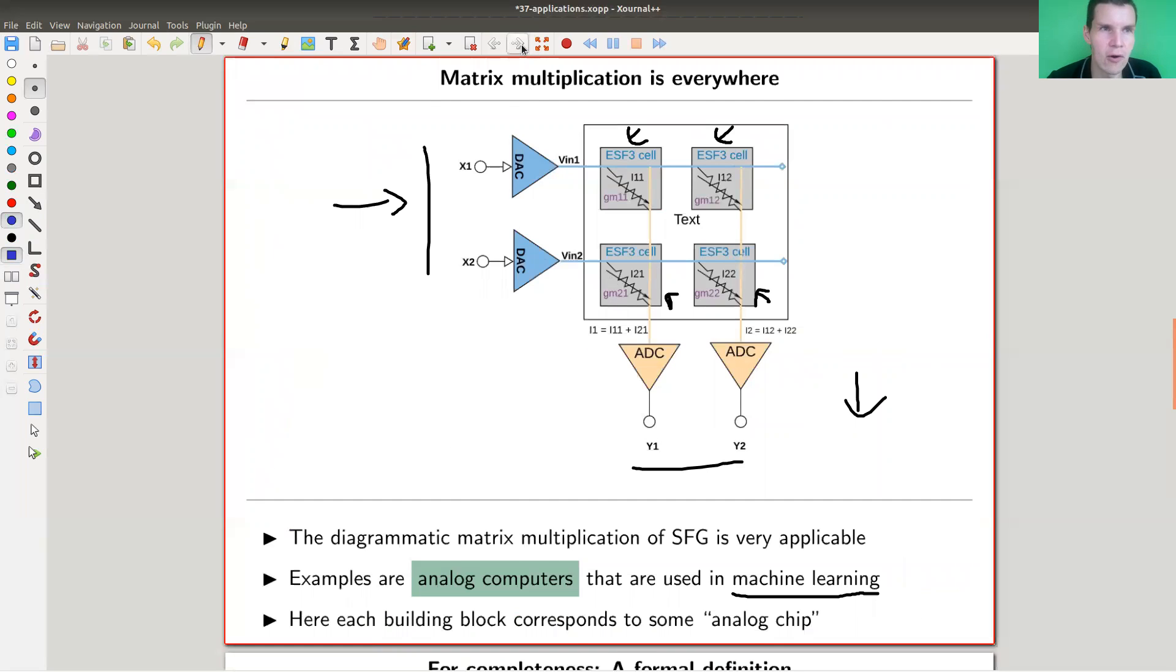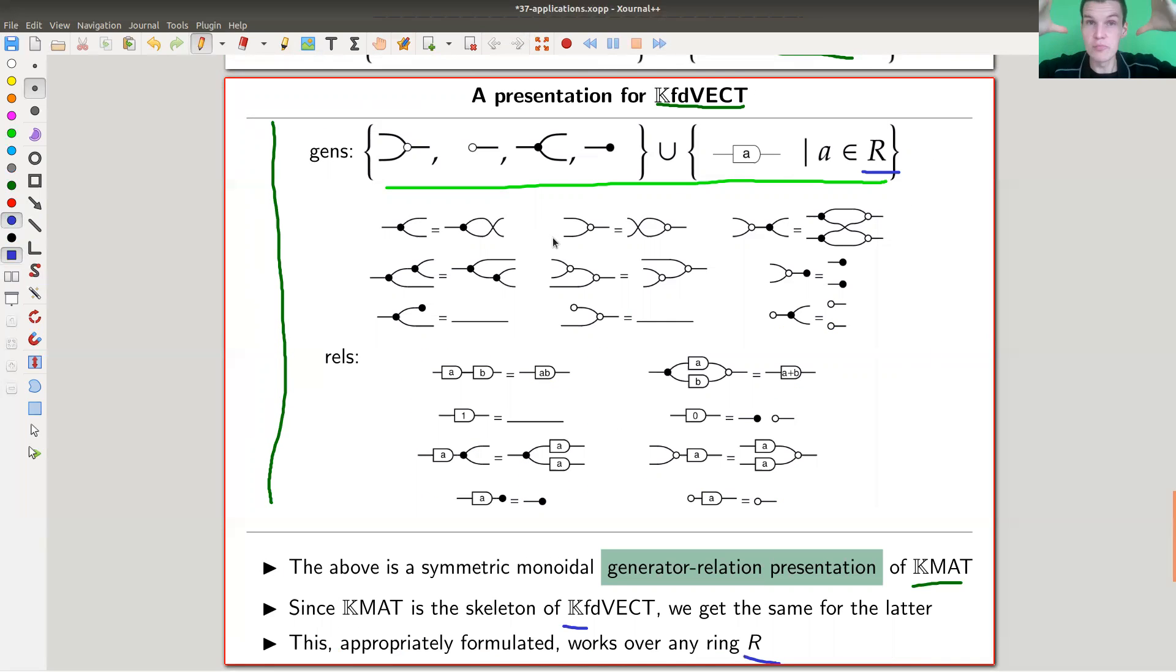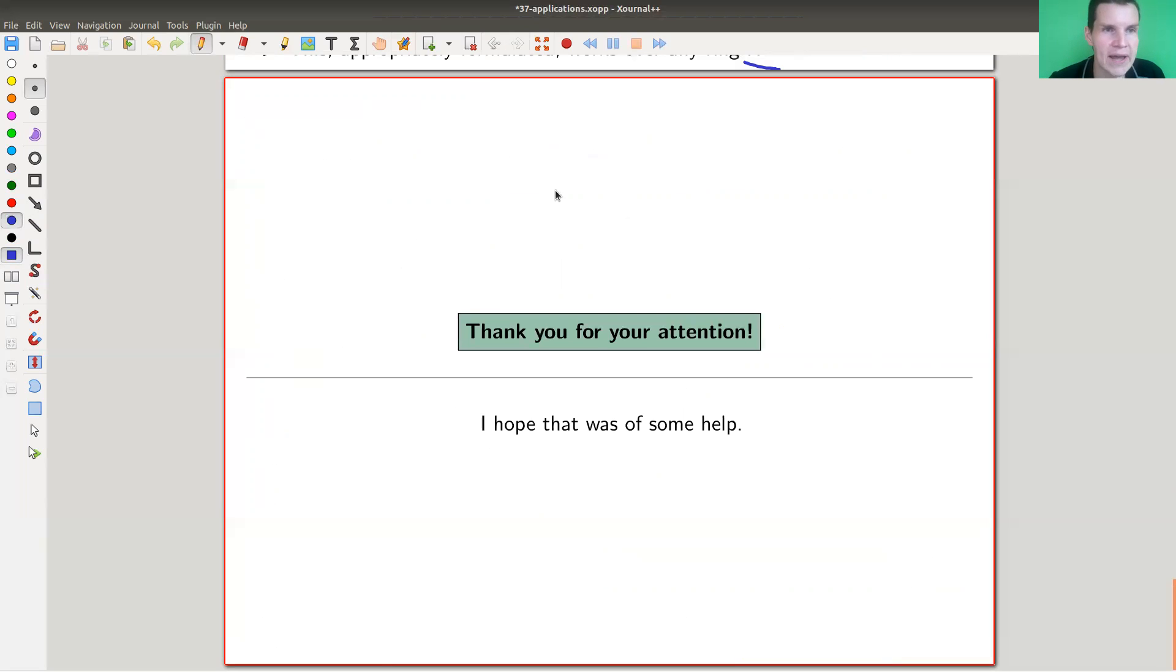Let me wrap up this final video. Props are a cool way of thinking about real world applications like matrix multiplications using analog chips in terms of the language of category theory. There's even some nice category theory going on in this generator and relation presentation of the category of matrices.